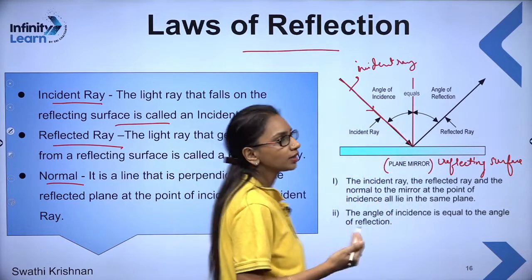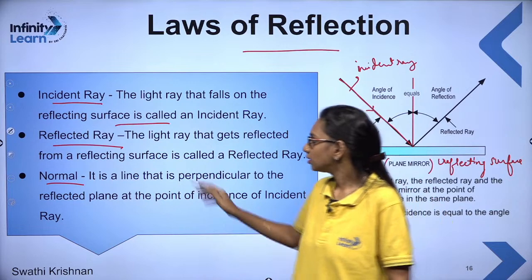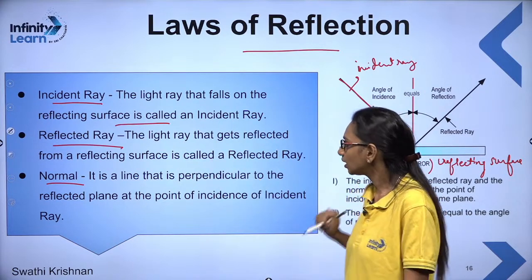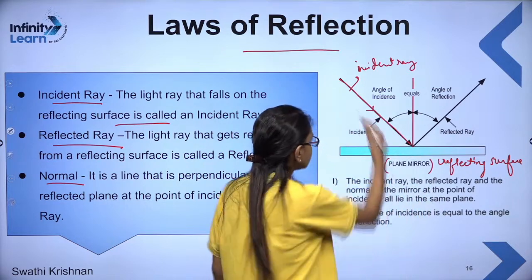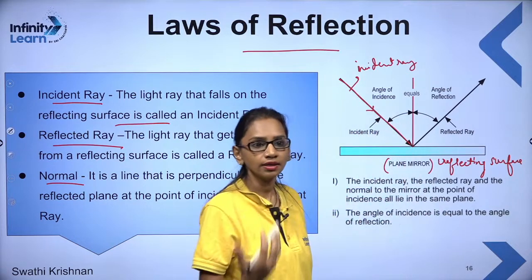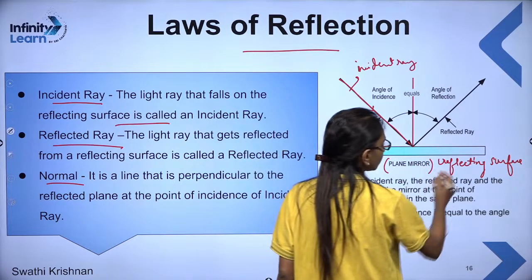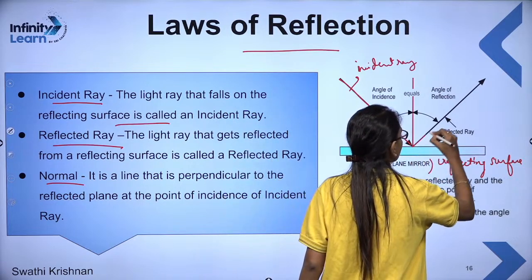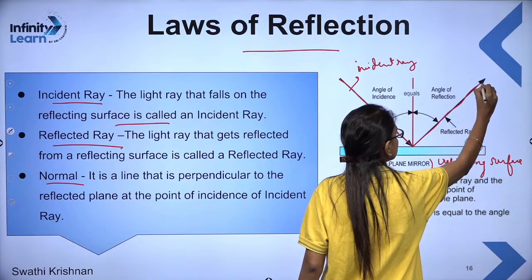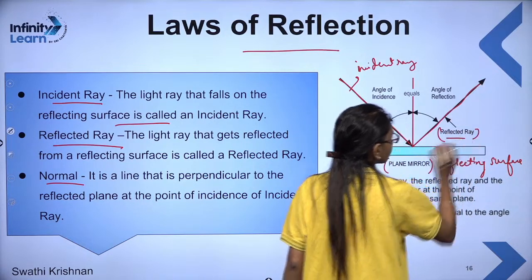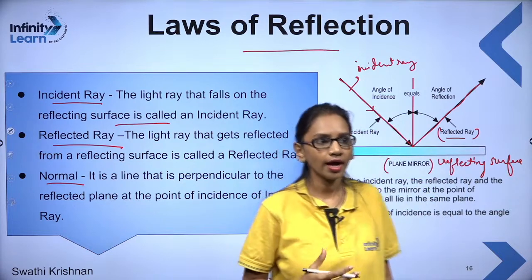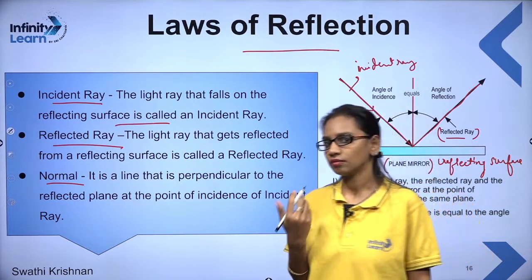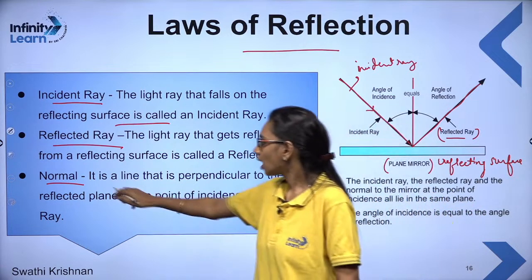The reflected ray is the light ray that gets reflected from the reflecting surface. The incident ray hits the mirror or reflecting surface, and then bounces back — that bounced back ray is basically your reflected ray.